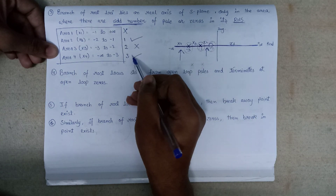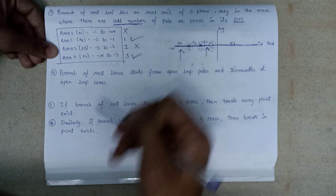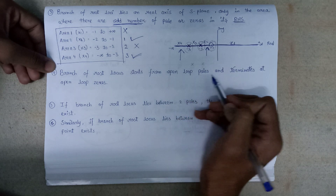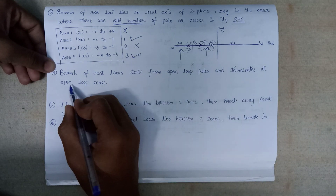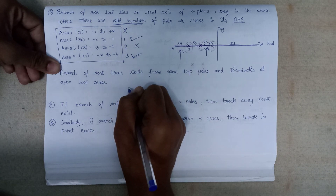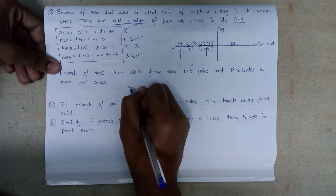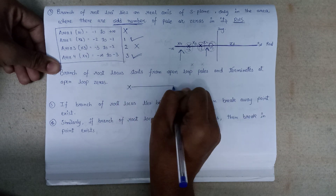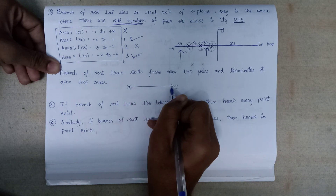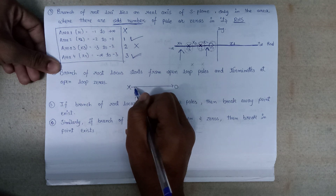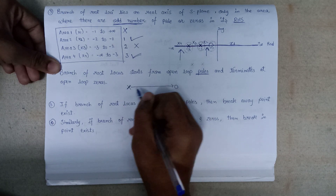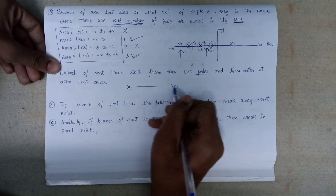The next rule: the branch of the root locus starts from the open loop poles and terminates at the open loop zeros. Poles are represented by × and zeros by a circle. The branch of root locus always originates from a pole and terminates at a zero.